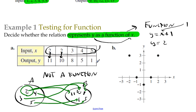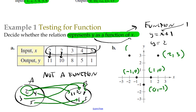Now let's look at a set of plotted points and ask whether they represent a function. We have the points: (2, 3), (1, 0), (0, -1), (-1, 0), and (-2, 3). By definition, all x values must go to only one y value. Negative two only goes to three, negative one only goes to zero, zero only goes to negative one, one only goes to zero, and two goes to three. None of these x values go to two different y values, so this is a function.